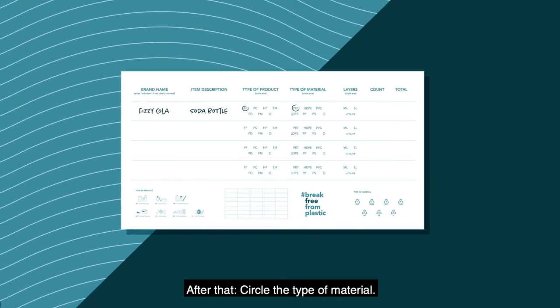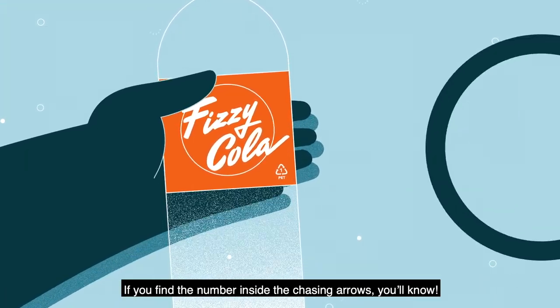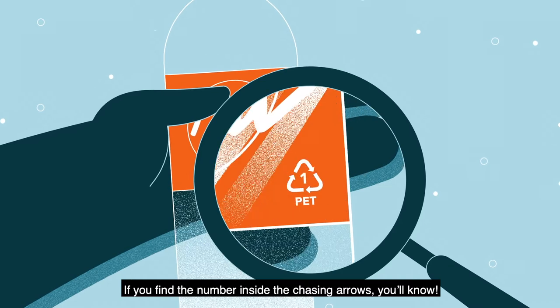After that, circle the type of material. Refer to the key on the bottom right of the data card for the appropriate abbreviations. If you find the number inside the chasing arrows, you'll know.